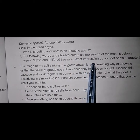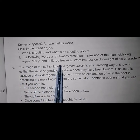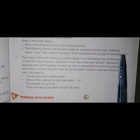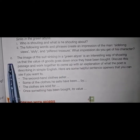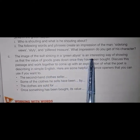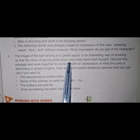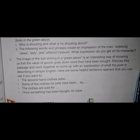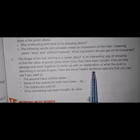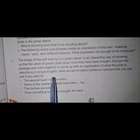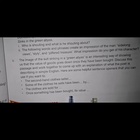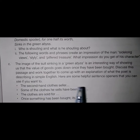Second question: The following words and phrases create an impression of the man — 'sidelong views,' 'a slyly filched trial.' What impression do you get of his character? We feel that the man is cunning and clever. He is going to cheat his buyers. Part C: The image of the suit sinking in a green abyss is an interesting way of showing us that the value of goods goes down once they have been bought. Discuss this passage and work together to come up with an explanation of what the poet is describing in simple English, using the helpful sentence openers provided.